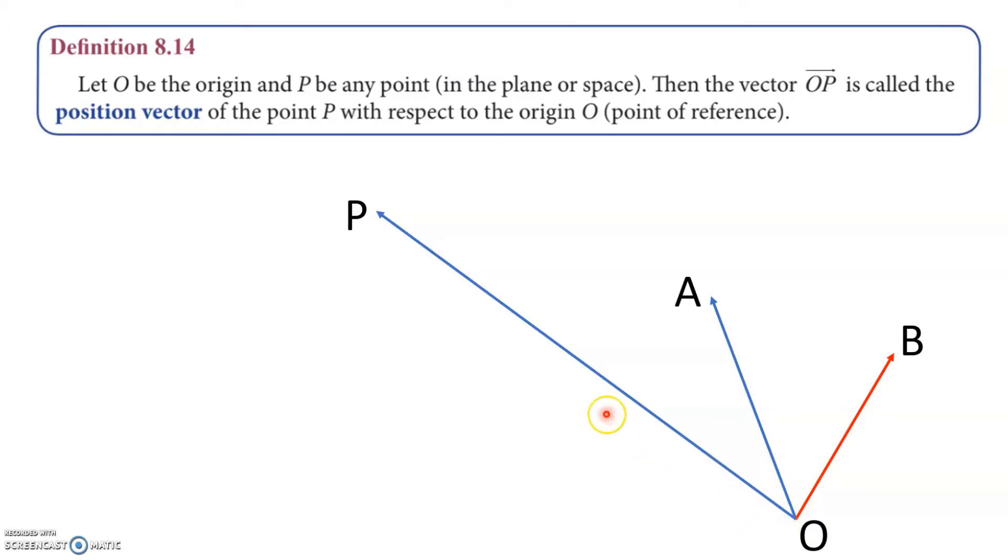Now the vector OP can be defined as a position vector because it starts from the origin O. Similarly, OA and OB are all position vectors.